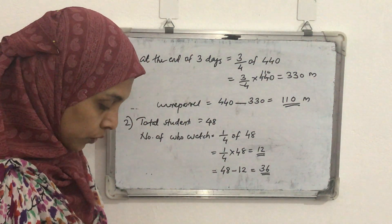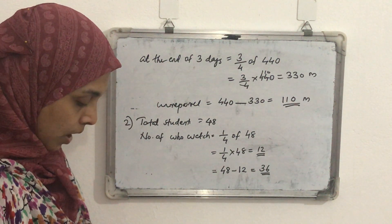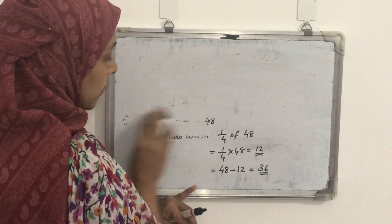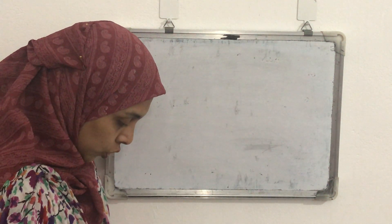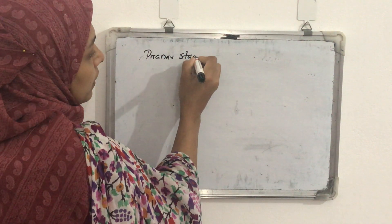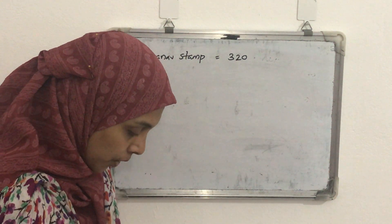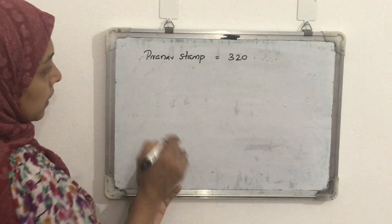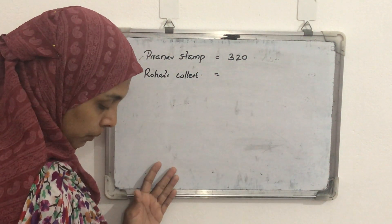Next question: Rohan has a collection of stamps. His collection is 3¾ times that of Pranar's collection of stamps, which is 320 stamps. How many stamps does Rohan have? Pranar's stamp collection is 320 stamps. Rohan's collection is 3¾ times Pranar's collection.